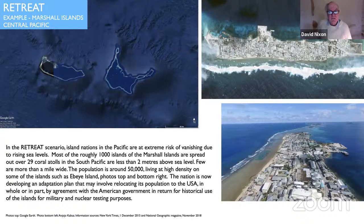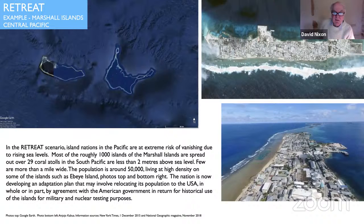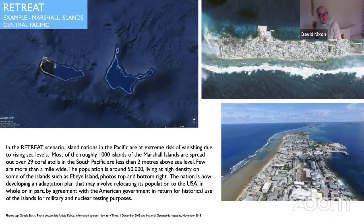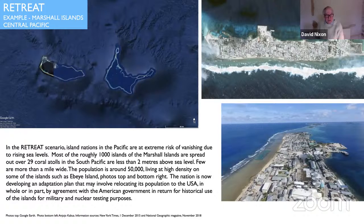Much more serious is a situation like this, right out in the Pacific. The Pacific is full of low-lying islands that are in great danger of disappearing due to rising sea levels. This is an example of one of the most densely developed of them. This is in the Marshall Islands in the Central Pacific. There are 1,000 islands of the Marshall Group spread out over 29 coral atolls, all less than two meters above sea level. A few of them are more than a mile wide and the population is about 50,000 living at a very high density, as you can see in the photo on the bottom right.